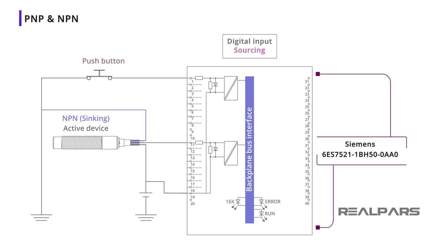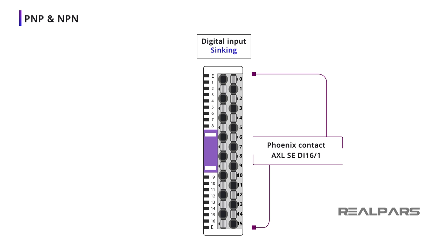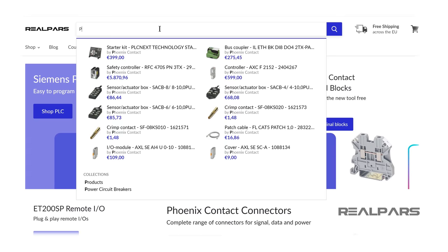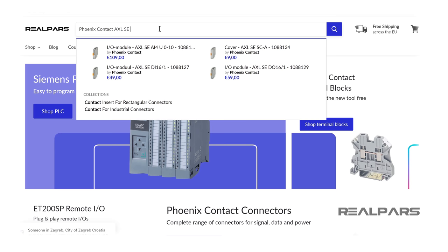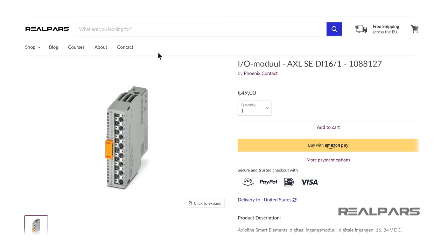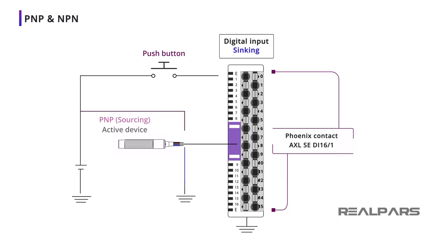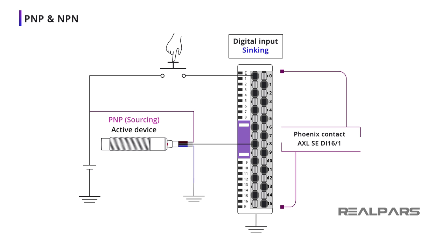Let's have a look at a sinking module. The Phoenix Contact Digital Input Module AXLSEDI16-1 is a sinking type. You can find the link to order this PLC module in the video description as well. Let's connect a push-button switch and a sourcing proximity sensor to two of the inputs. The current is flowing into the PLC module because it is a sinking type.